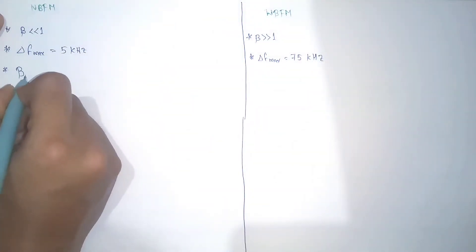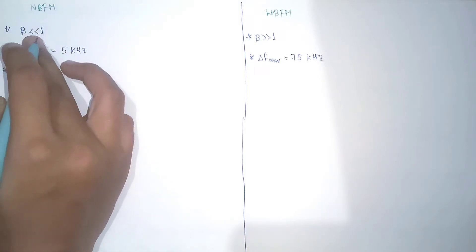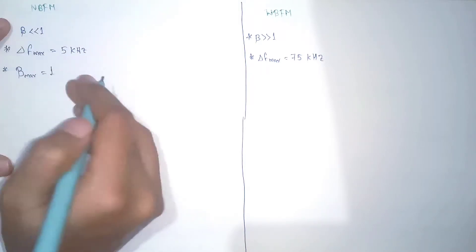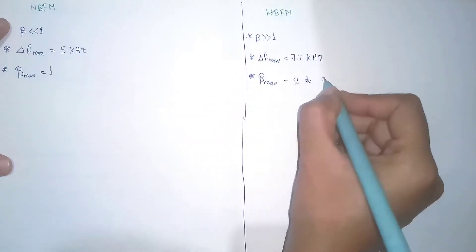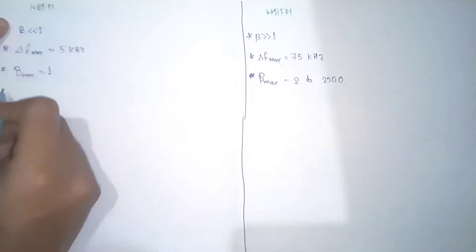And the next point is that here the beta max equals one, because it is very less than one, so maximum it may be equal to one. And here the beta max ranges from 2 to 2500.